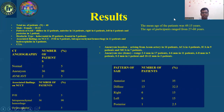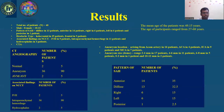Results: Total number of patients was 40, with a male to female ratio of 18 to 22. Pattern of SAH was diffuse in 13 patients, anterior in 14 patients, right in 6 patients, left in 6 patients, and posterior in 1 patient. Headache type was holocranial in 35 patients and frontal in 5 patients. Associated findings on NCCT head other than SAH were intraventricular hemorrhage in 9 patients, intraparenchymal hemorrhage in 11 patients, and hydrocephalus in 4 patients.